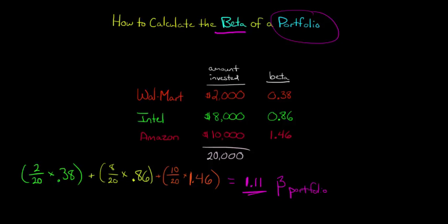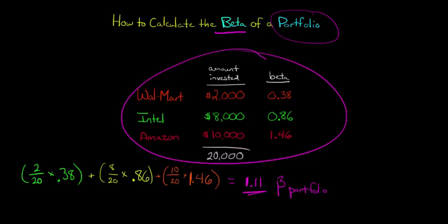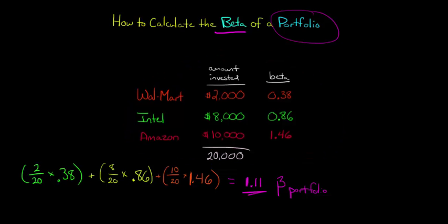Now that tells you how much systematic risk - that's what beta is, it's a measure of systematic risk - 1.11 is how much systematic risk there is in this portfolio that you've put together. And you notice that that 1.11, this is greater than the average systematic risk, or the systematic risk of an average firm, because it's greater than...